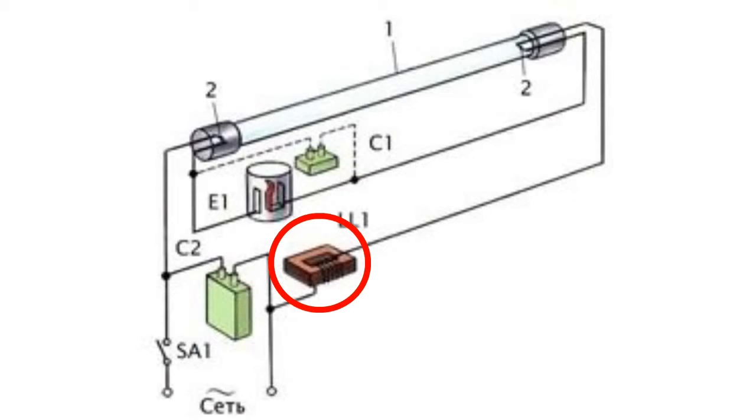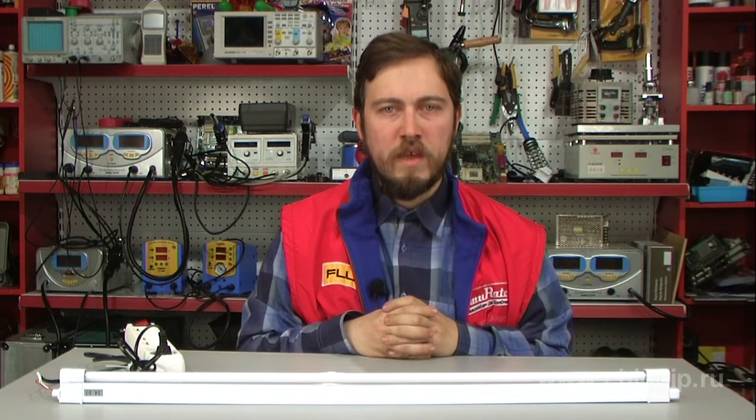The function of the throttle, apart from switching on the luminescent lamp, consists in hindering the unlimited current increase. In the absence of the throttle, the current increase would have caused the destruction of the lamp or the fusion of the safety devices within the flat electric network.